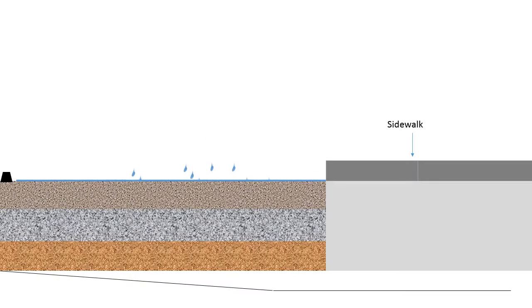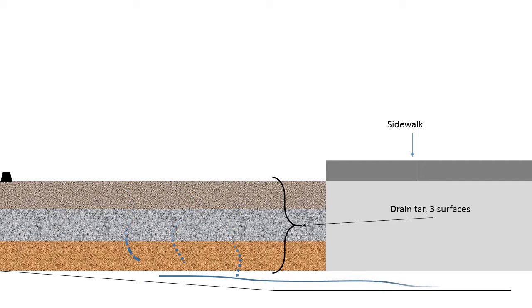First, an improvement of the cycle lane would be to implement a new tarmac that could absorb water from rain. This solution will help the cyclist keep control of his bike even in case of bad weather.